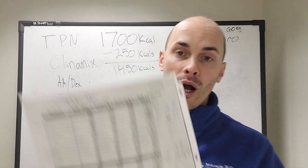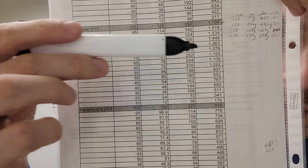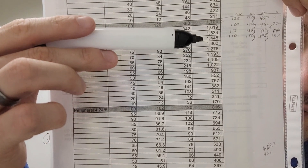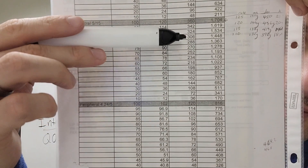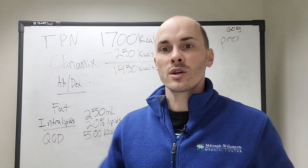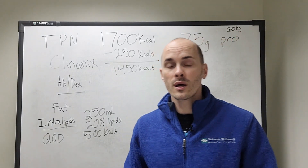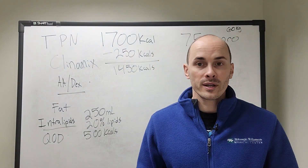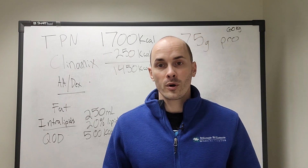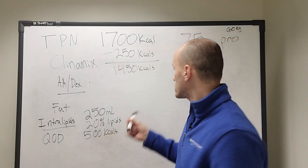If their protein needs were higher, we could look at the 515 solution. Going over to where the calories say 1,450 — does it meet their protein needs? It gives 102 grams. So if the patient had higher protein needs we could go with the 515 solution, but we don't need to give them 102 grams of protein. They only need 75, so I'm going with the 520 solution.